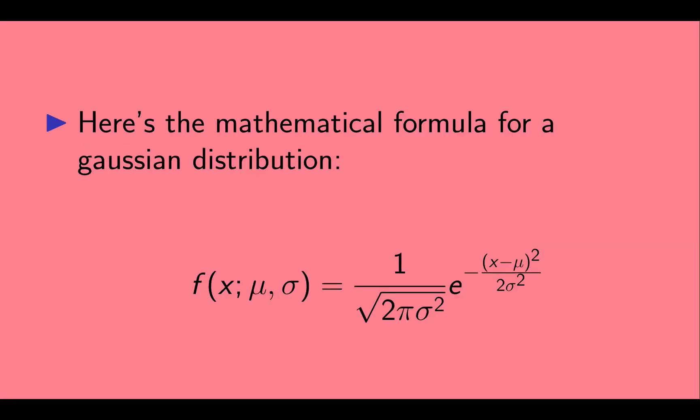Here's a mathematical formula for a Gaussian distribution. It's a function of x, and it also takes two parameters, mu and sigma.